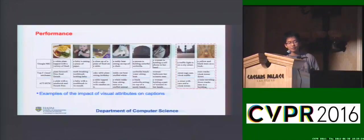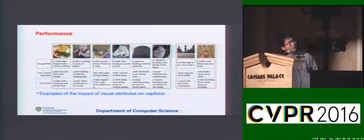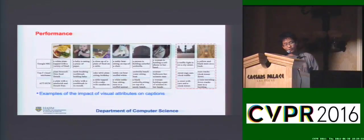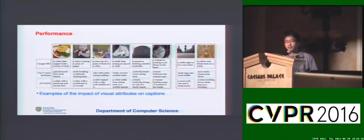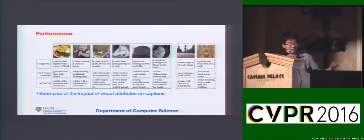Here is an example. We show some cases compared with Google Neural Talk. For example, the second one — the baby — the Google model may not generate a relevant sentence. But when supplied with attributes like 'baby' or 'toothbrush', we can make a more accurate caption.